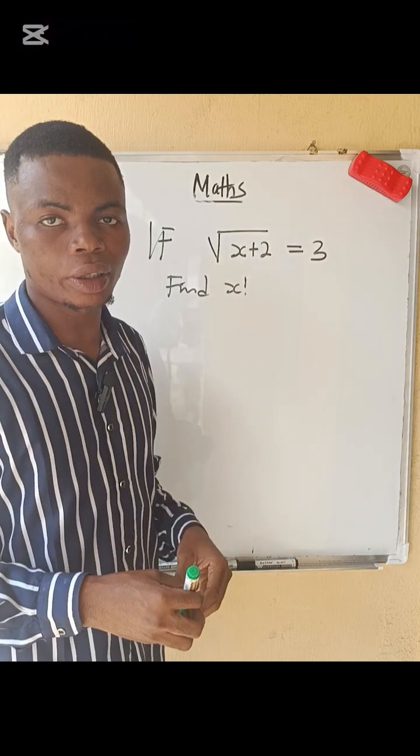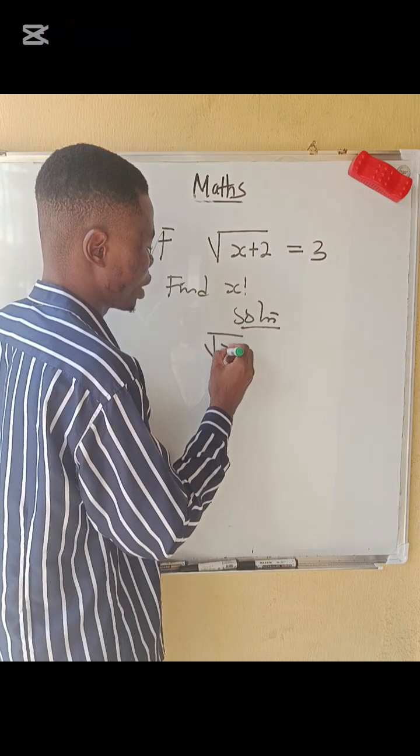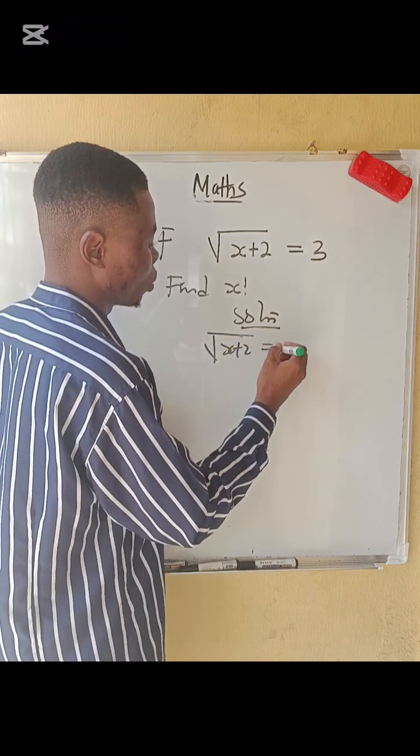Find x factorial. Solution: We have root x plus 2 equals 3.